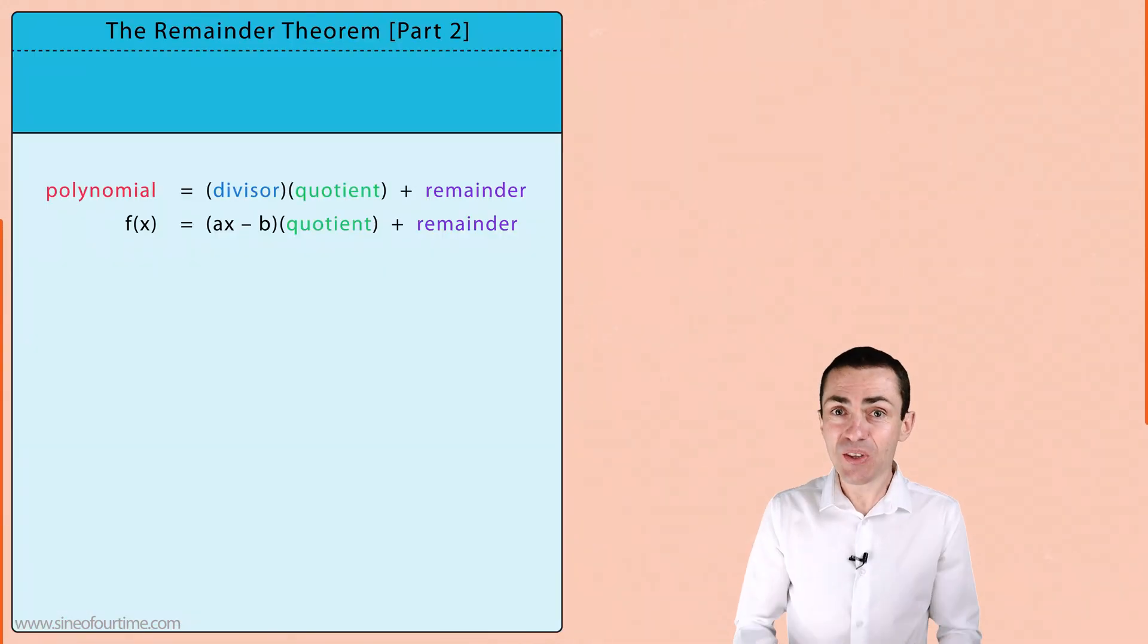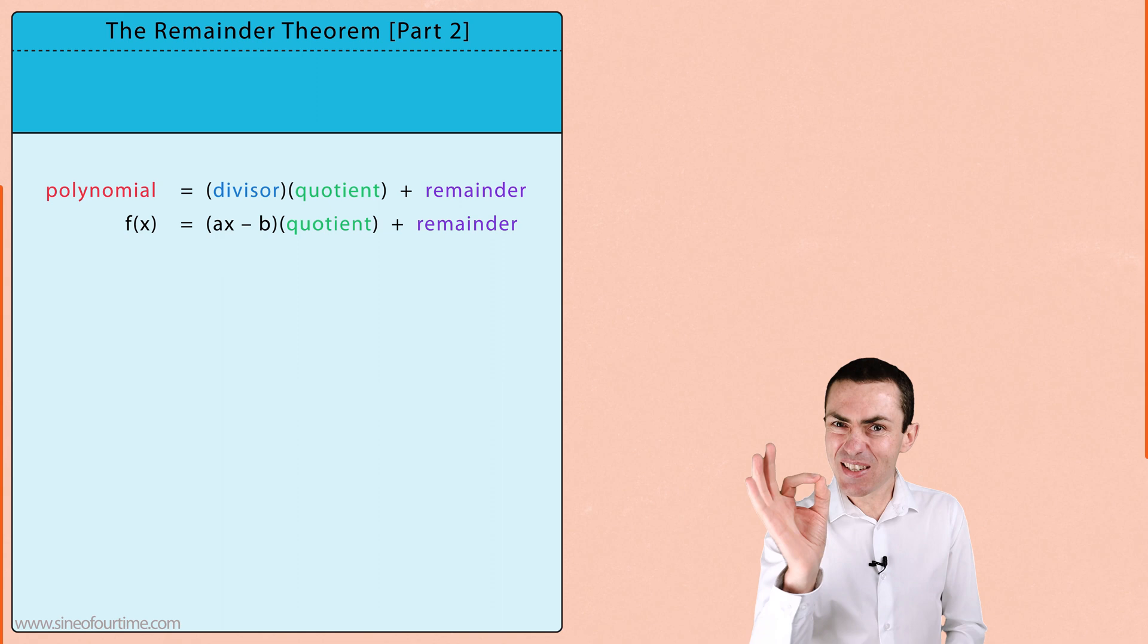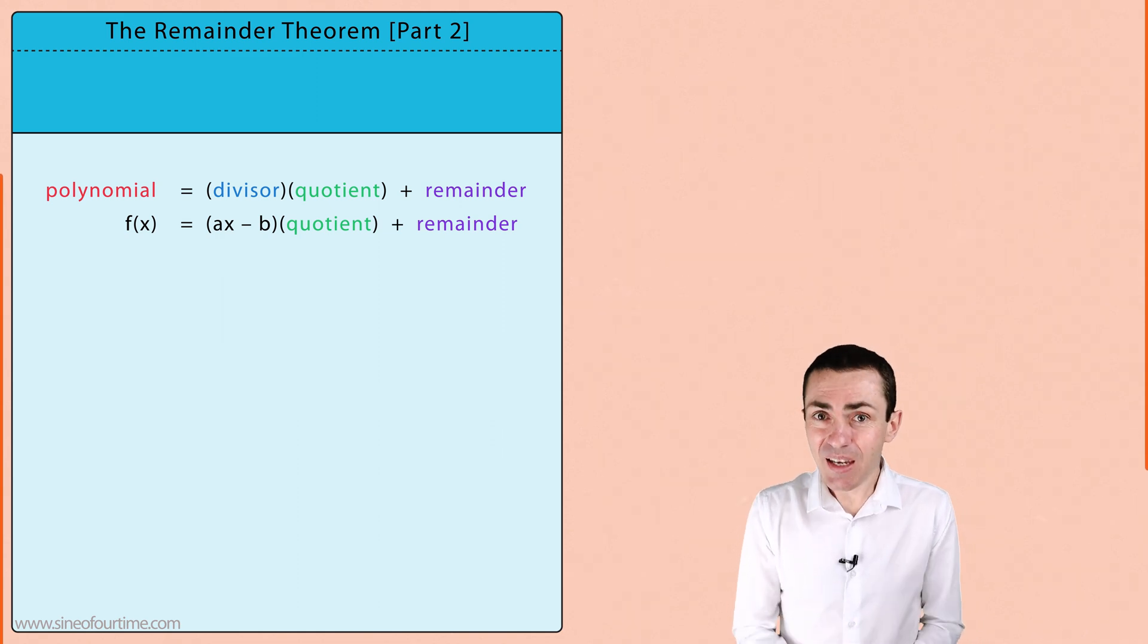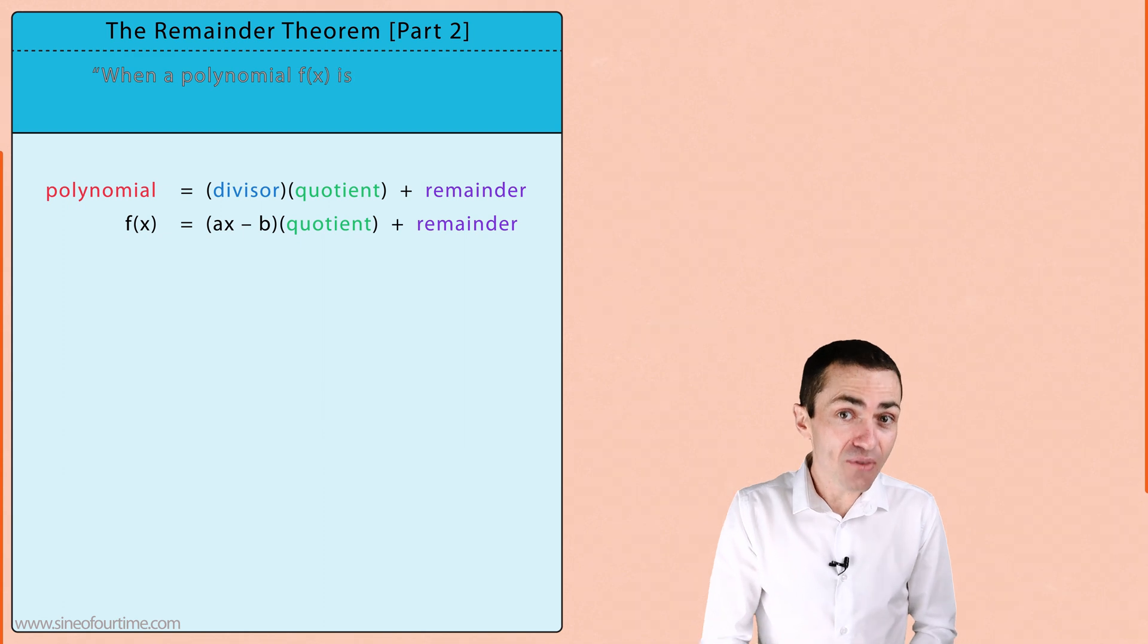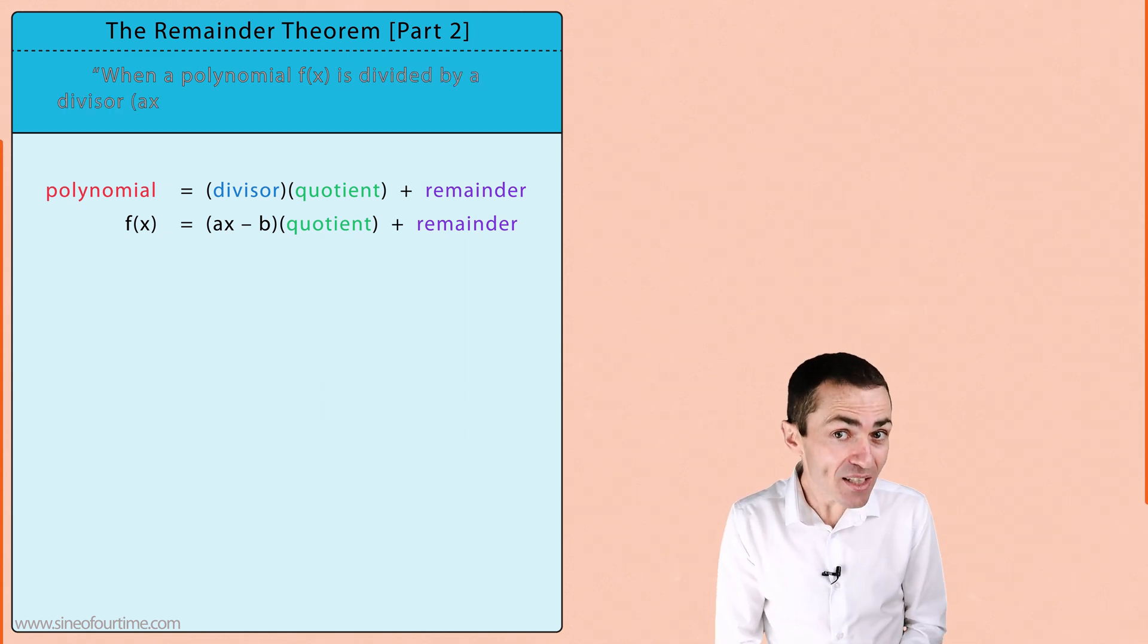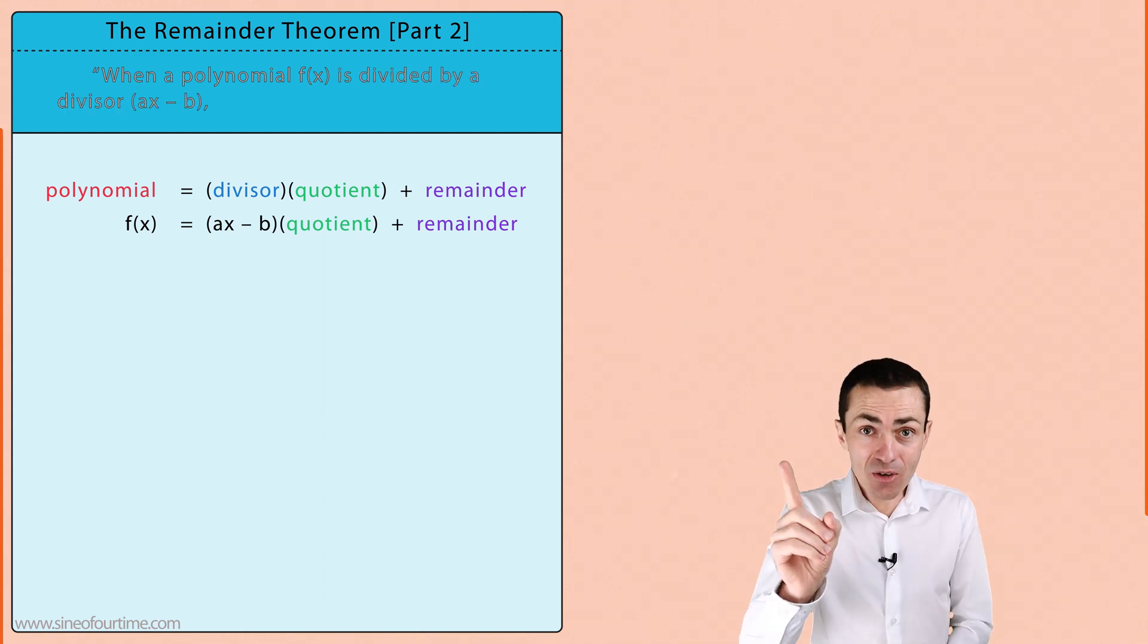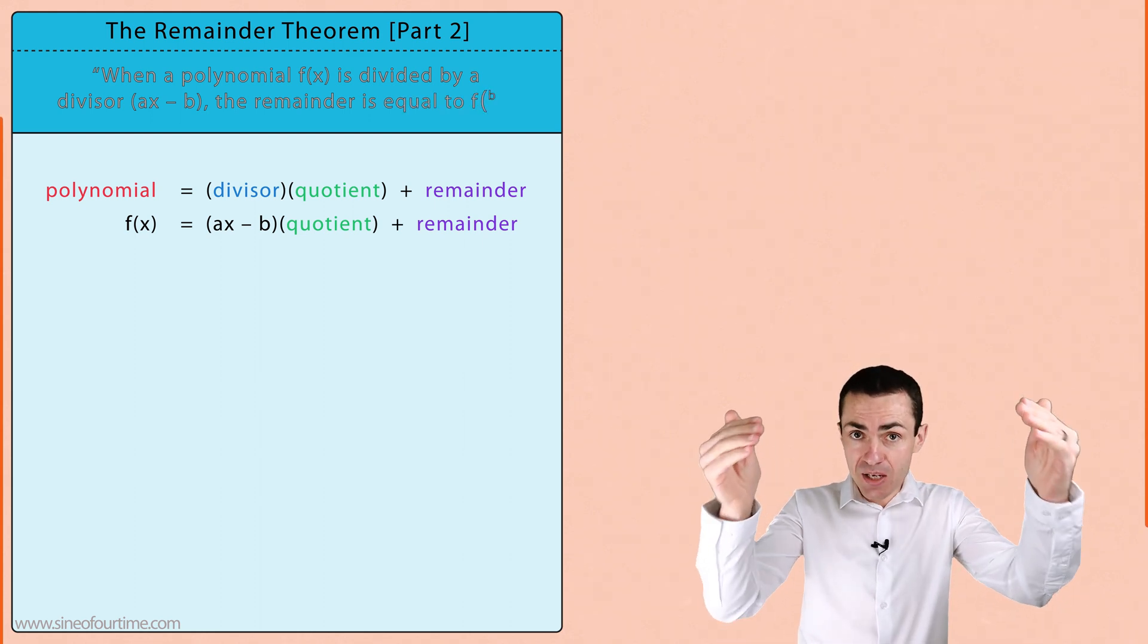The same logic is used with divisors of the form ax minus b but the remainder theorem needs a slight adjustment. It states that when a polynomial f(x) is divided by a divisor ax minus b then the remainder is equal to f(b/a).